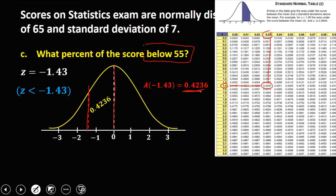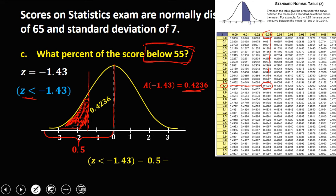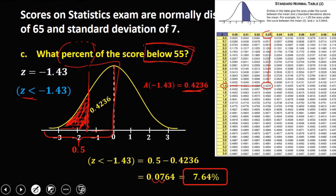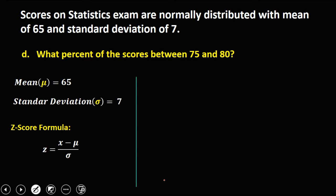The area of 0.4236 belongs to the region from the mean to −1.43. Since we want below (less than, to the left), the unknown area is to the left. Half the curve is 0.5, so the area = 0.5 − 0.4236 = 0.0764. Converting to a percentage by moving two decimal places to the right: 7.64% of scores are below 55.